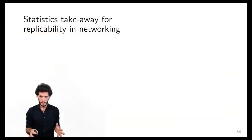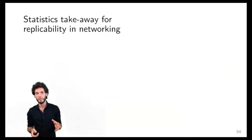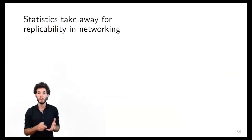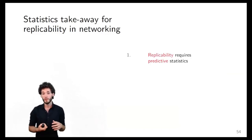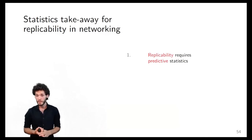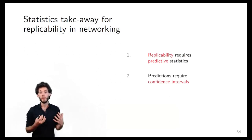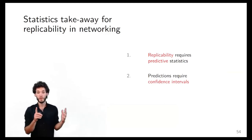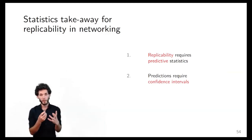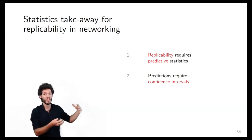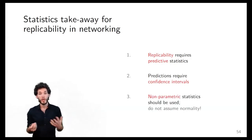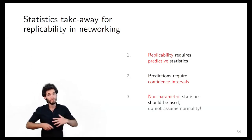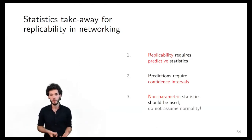Three key takeaways from this statistics section. First: to talk about replicability, we need predictive statistics. Second: to make predictions, you need confidence intervals — they quantify the certainty and uncertainty about your estimates. Third: you should use non-parametric statistics, because most of the time you cannot assume normality with the data you work with.